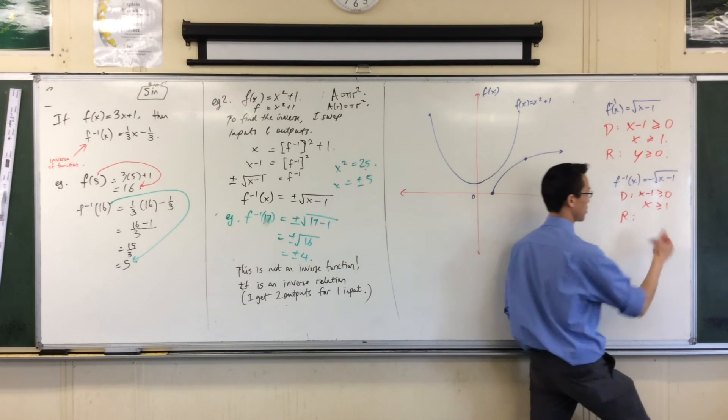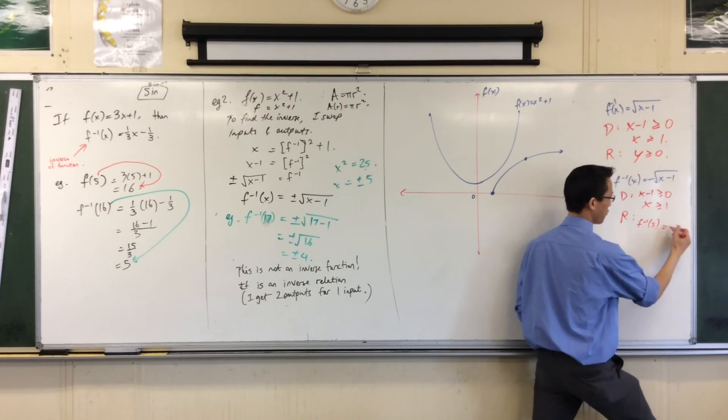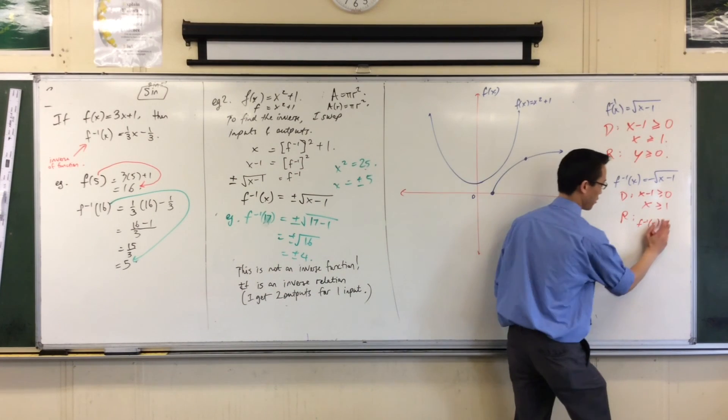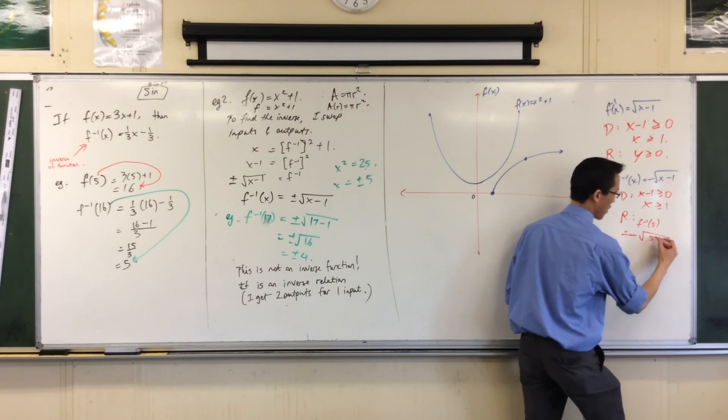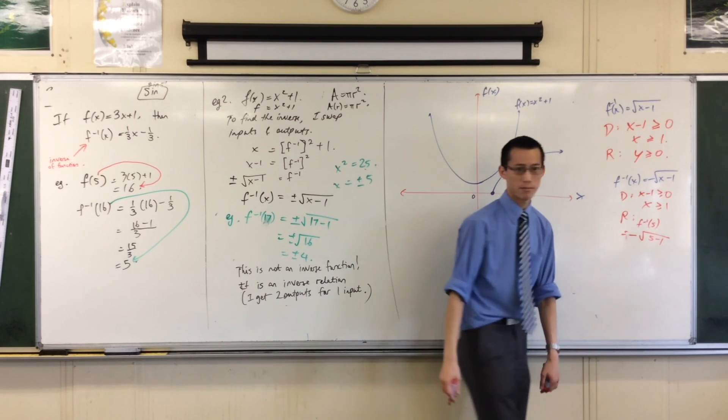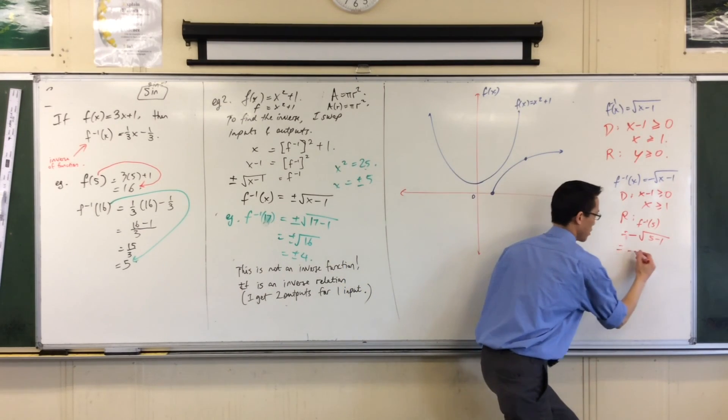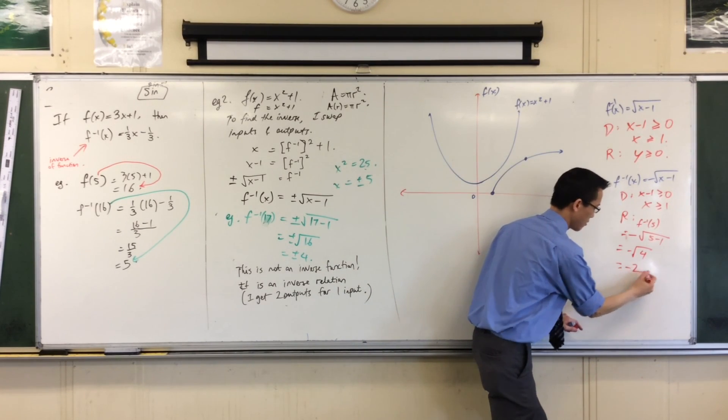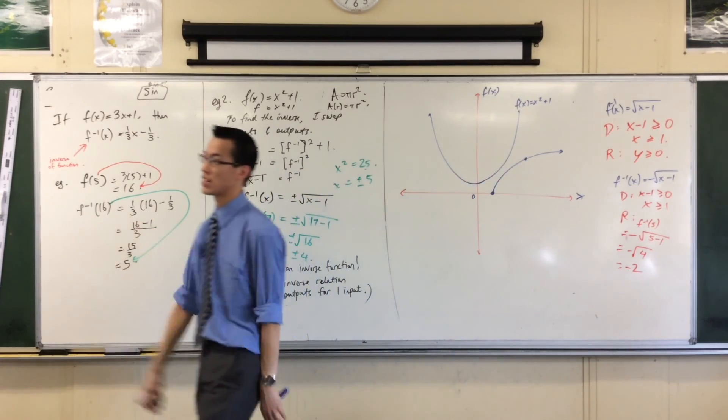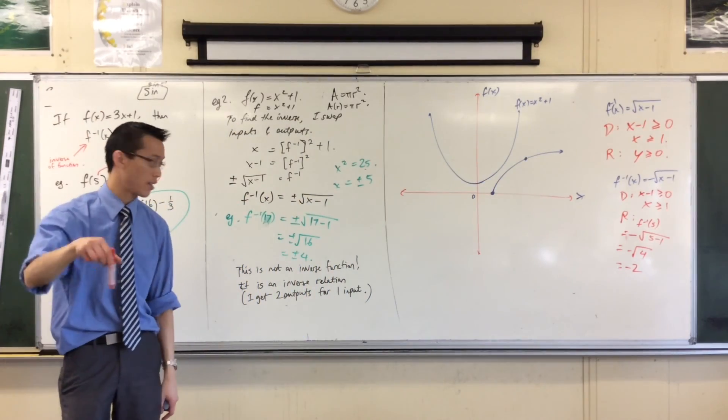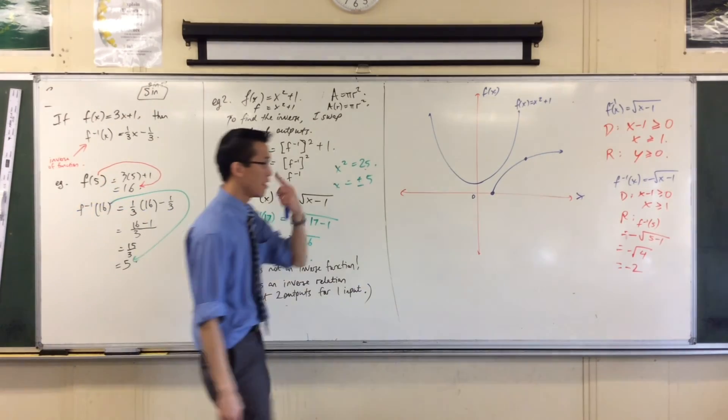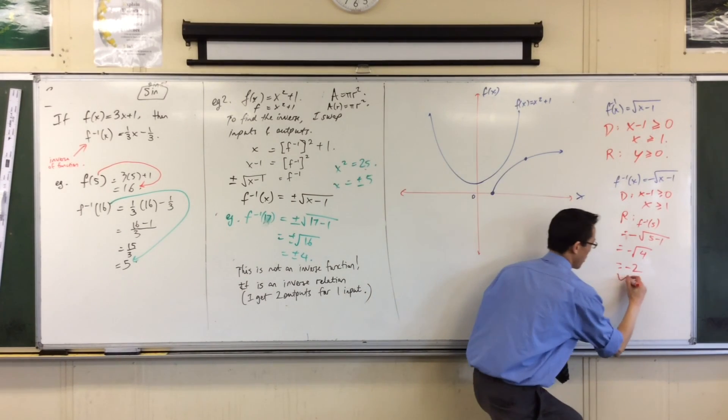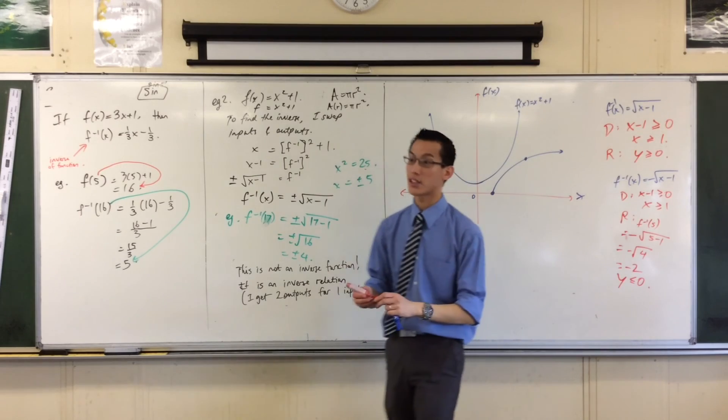f of the inverse of 5. I am dutifully going to replace all of my x's with 5's. So, minus the square root of 5 take away 1. That's minus the square root of 4. That's negative 2. And, in fact, the more x's you put in, the bigger those x's get, the more negative y's going to get. It's going to keep dropping. So, in fact, the range of this guy is the opposite of the range of this guy. It's the other way. Less than or equal to 0. It's going down.